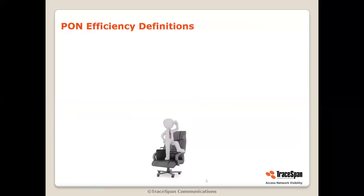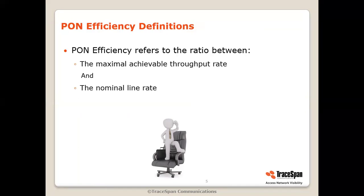Now let's go to some PON efficiency definitions. PON efficiency refers to the ratio between the maximal achievable throughput rate and the nominal line rate.